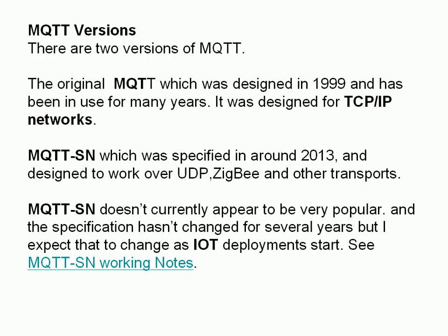There are actually two versions of MQTT. There's the original version designed in 1999 to work over TCP/IP networks, and there's the newer version called MQTT-SN, specified in 2013, designed to work over UDP and other network transports. MQTT-SN isn't very popular at the moment and you won't find much information about it on the Internet. The two protocols are incredibly similar — once you know one you'll know the other. In this video we're going to concentrate on the original version, the one designed to run over TCP/IP.